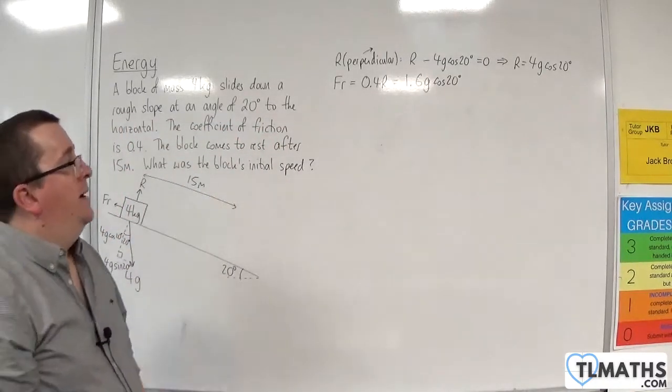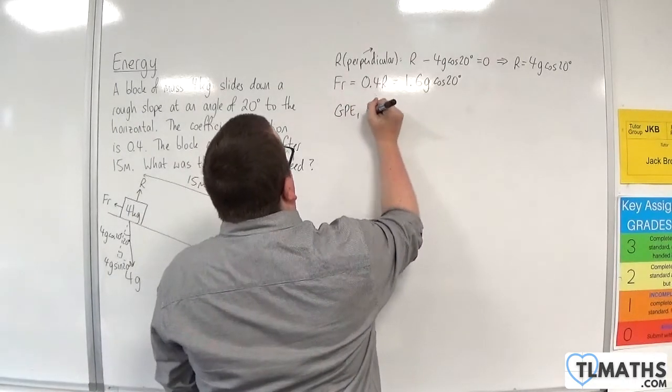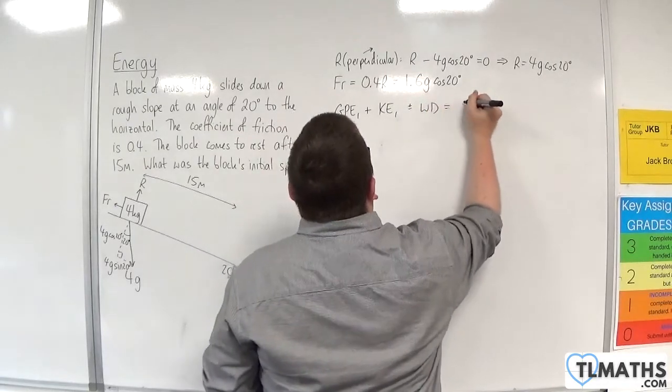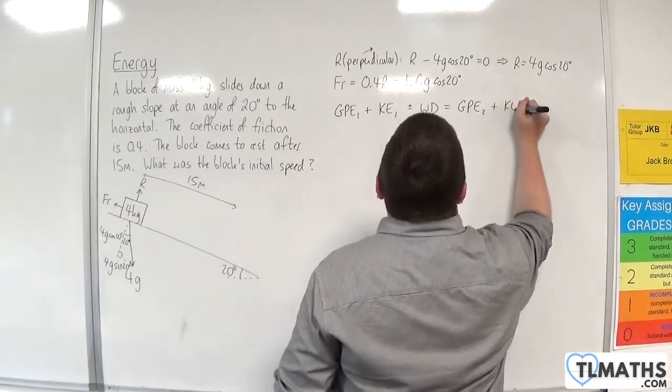So now I can use the work energy principle. The initial gravitational potential energy plus the initial kinetic energy plus or minus the work done is going to be equal to the final gravitational potential energy plus the final kinetic energy.